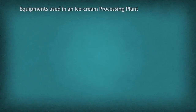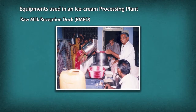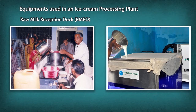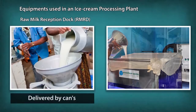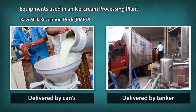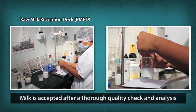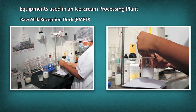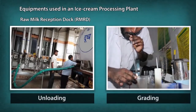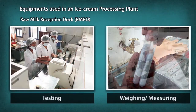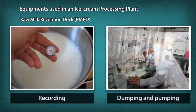Equipments used in an ice cream processing plant. Raw Milk Reception Dock: The place in the dairy plant where milk first arrives and is received after grading for acceptance is known as the Raw Milk Receiving Dock. Milk is delivered to the dairy plant either in cans or in tankers. Since further processing of milk mainly depends upon its quality, the decision of accepting the milk must be done immediately after arrival and thorough investigation. Reception includes unloading, grading, conveying, sampling, testing, weighing or measuring and recording, dumping and pumping.